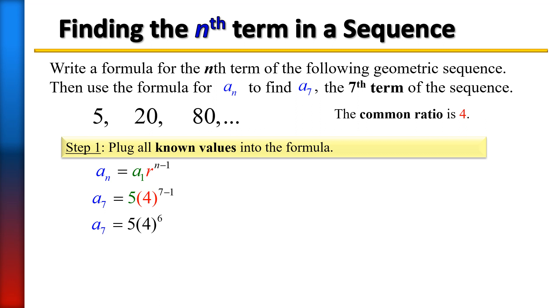And then you're going to multiply that with 5 to give you your seventh term, and that is 20,480.